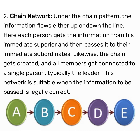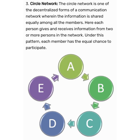The third type of communication network is Circular Network. In a circular network, each person can communicate with his adjoining two persons, and thus communication flows in a circle. The circle network is one of the decentralized forms of a communication network, wherein the information is shared equally among all the members. Each person gives and receives information from two or more persons in the network, and each member has an equal chance to participate.